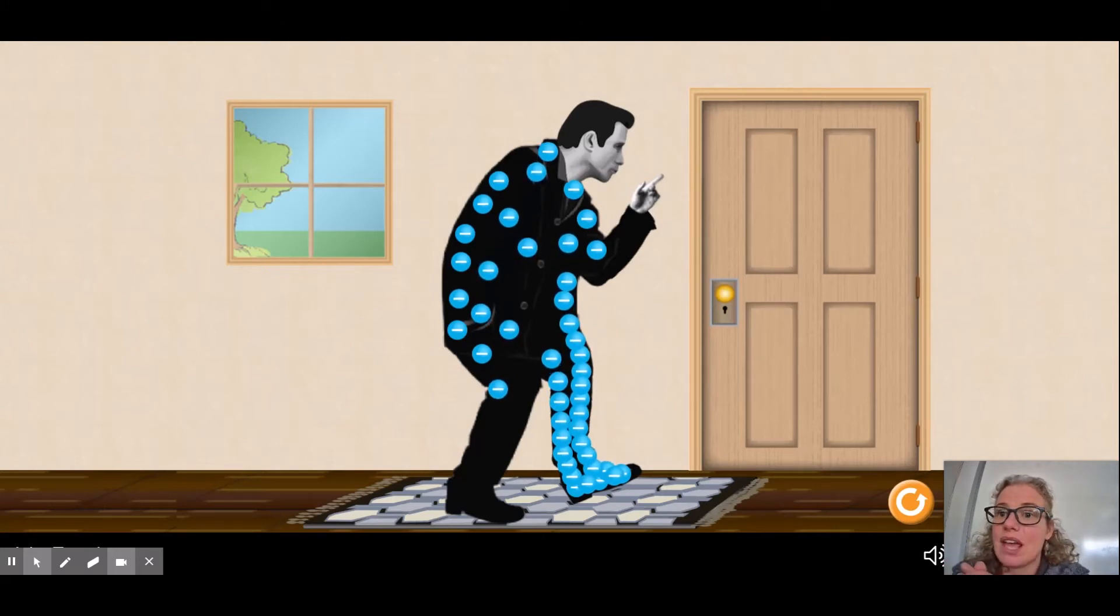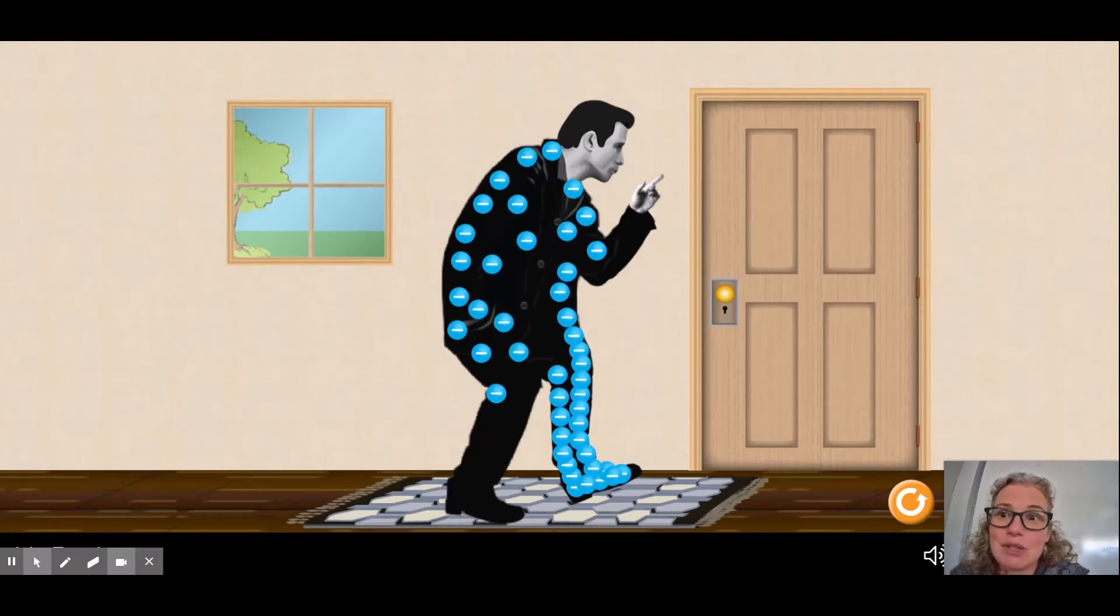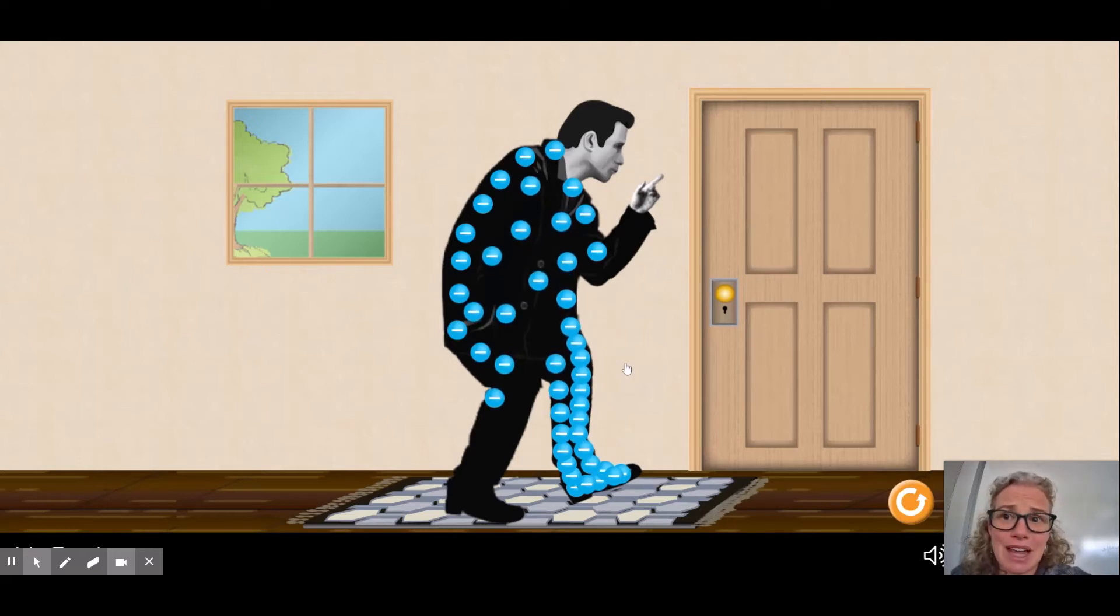Now it depends on the material. As you've experienced, certain types of materials are more likely to allow those electrons to transfer than others. Now what do you think is going to happen if I let his finger touch the door knob?